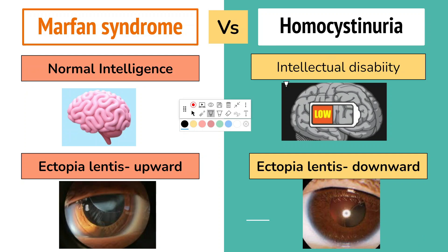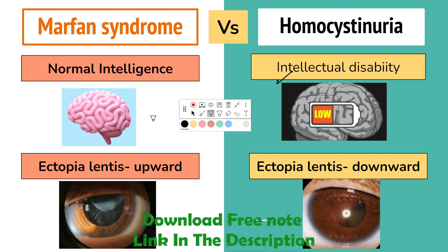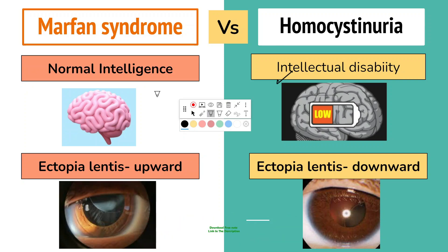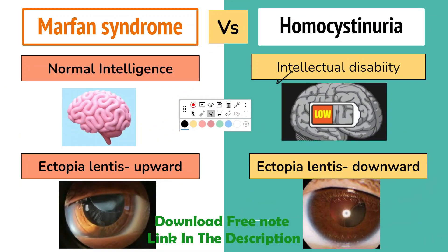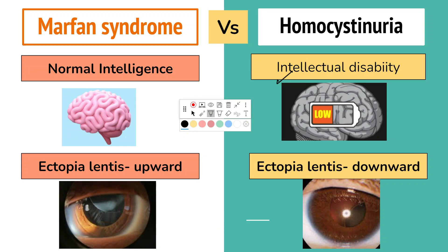There are a few differences between Marfan syndrome and homocystinuria. Patients with homocystinuria will have mental retardation and seizures, which are not usually present in Marfan syndrome. The lens dislocation tends to occur in different directions: upward in Marfan syndrome and downward in homocystinuria.